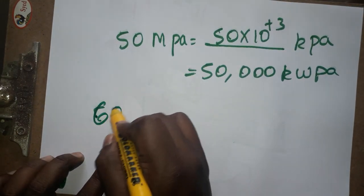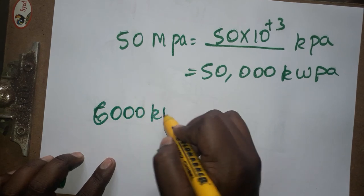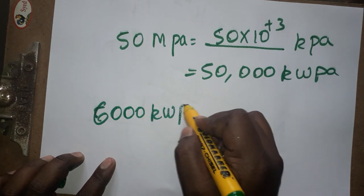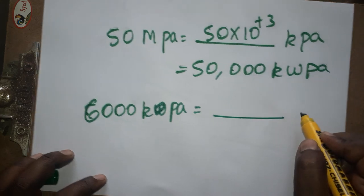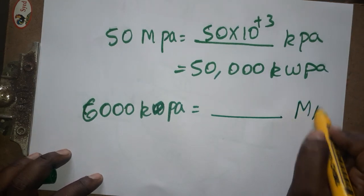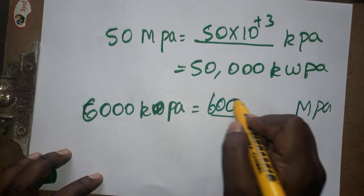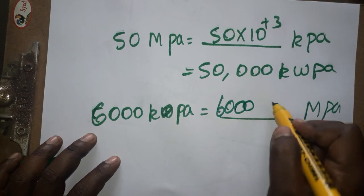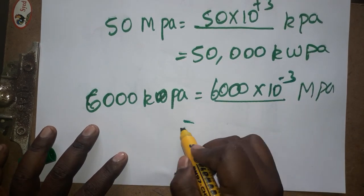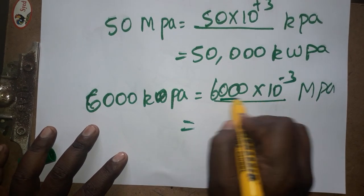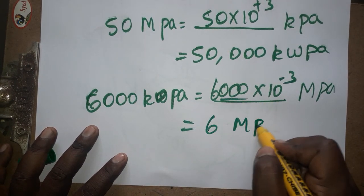Convert 600 kilopascals to megapascals: 600 × 10⁻³ = 0.6 megapascals.